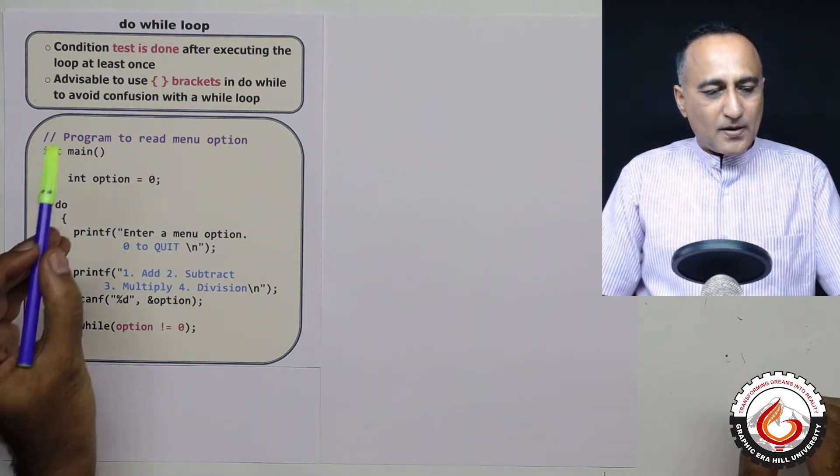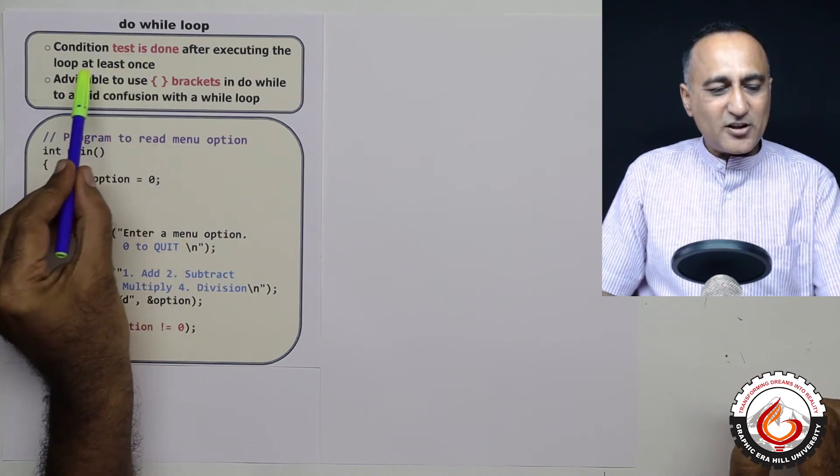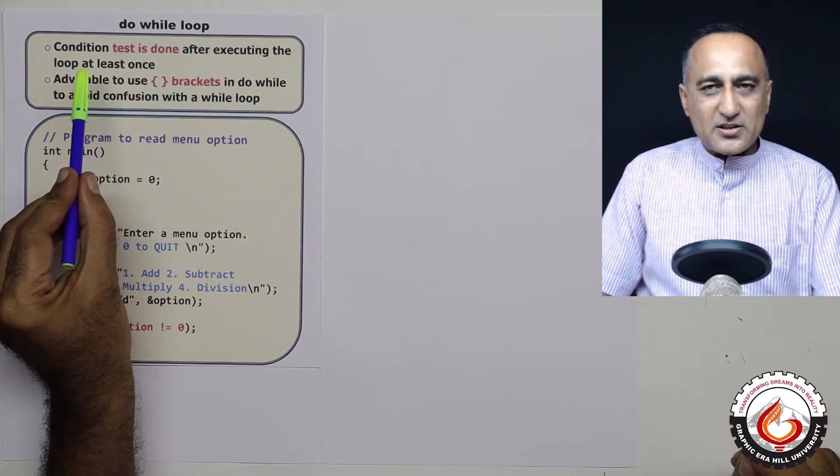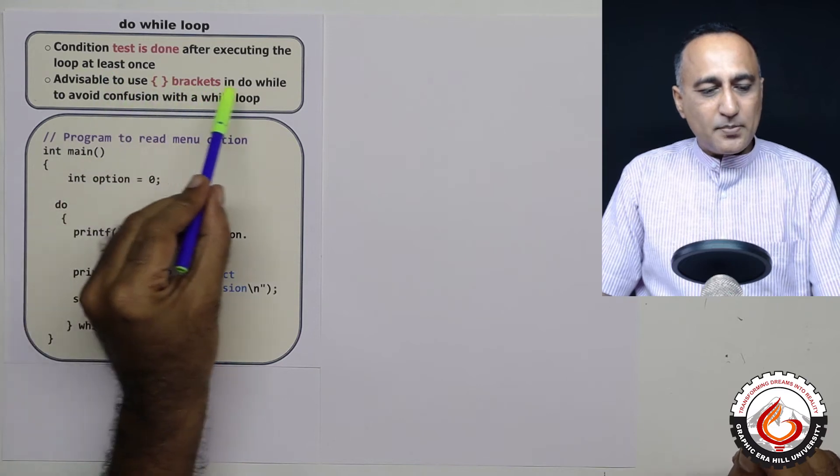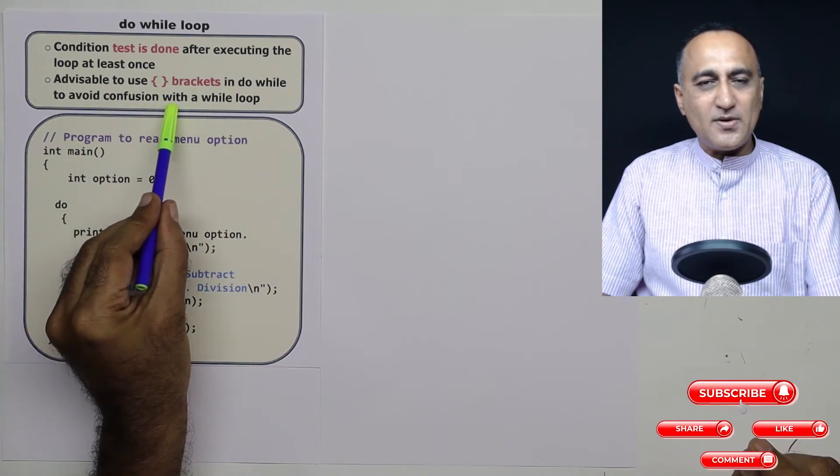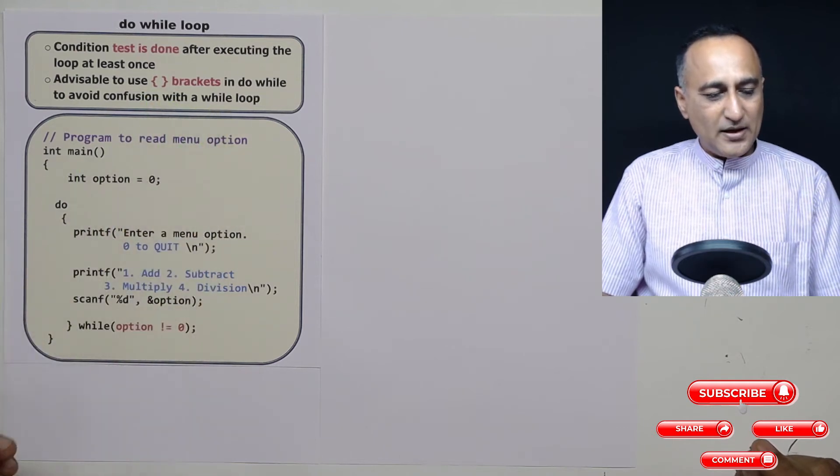So the difference between the other loops is the testing is done after the loop body executes at least once. With any loop statement, whether it's the for, while, or the do while, please do use compound brackets to avoid any confusion, and especially in case of the do while loop to avoid confusion with the while loop.